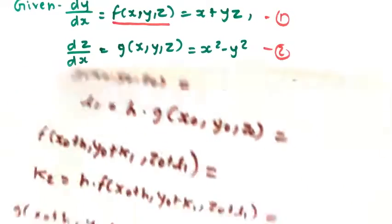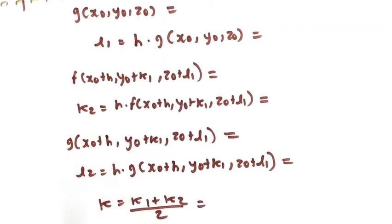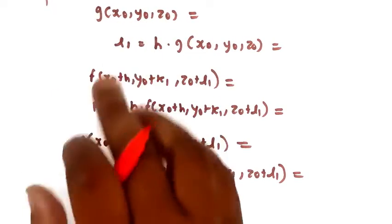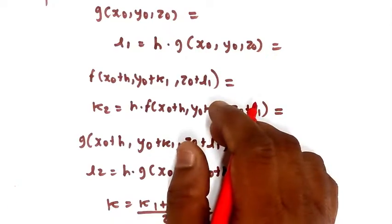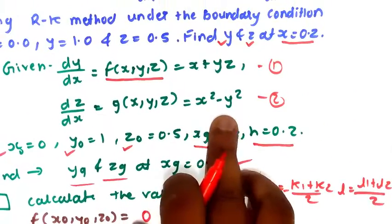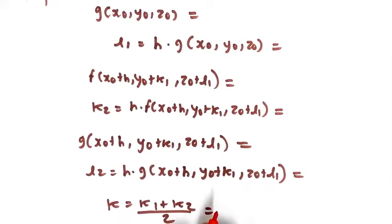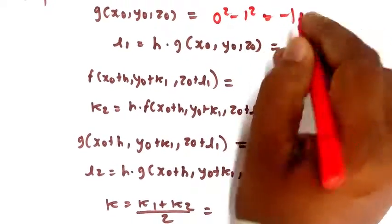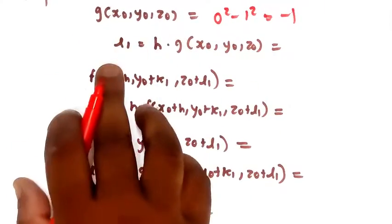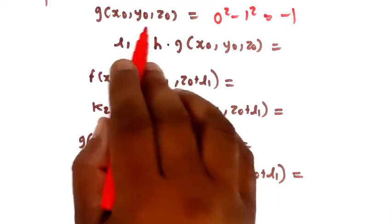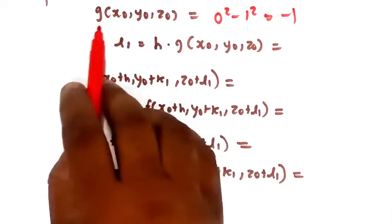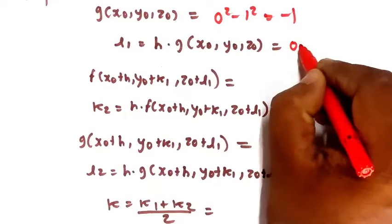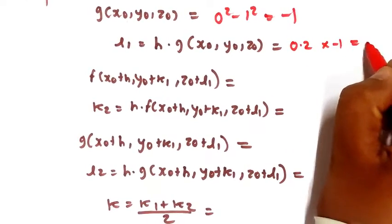Next, find L1: evaluate g(x₀, y₀, z₀) = x² - y² = 0² - 1² = -1. Then L1 = h × (-1) = 0.2 × (-1) = -0.2.